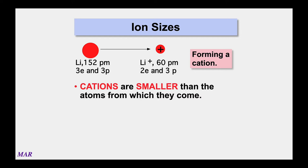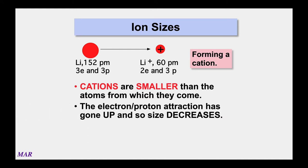Forming a cation — a positive ion — makes it always smaller than the neutral atom it came from. Protons are pulling more on electrons, so it pulls in tighter. Lithium goes from 152 picometers down to 60 picometers — quite a bit smaller. The effective nuclear attraction has gone up, so size decreases. Cations are always smaller than the neutral atoms from which they came.